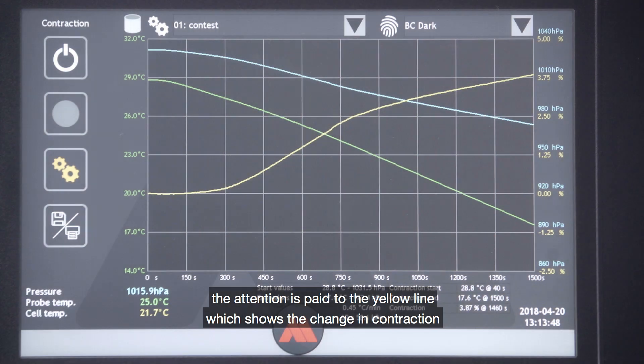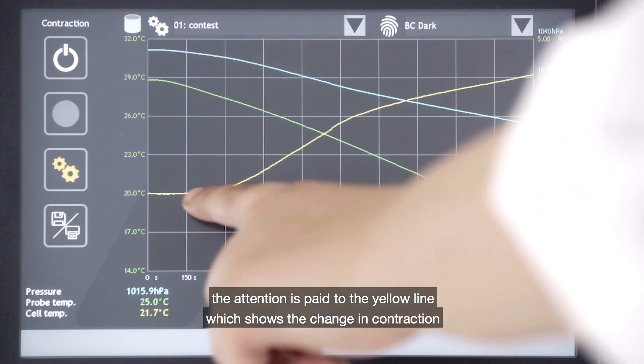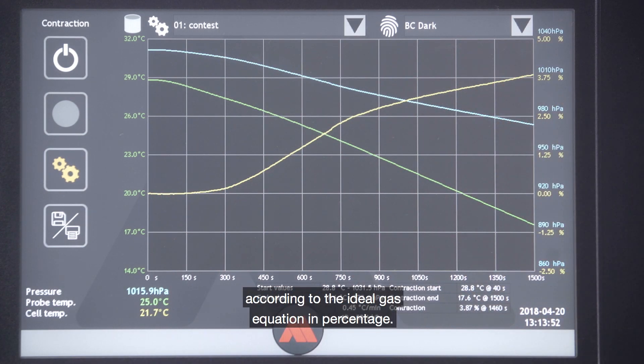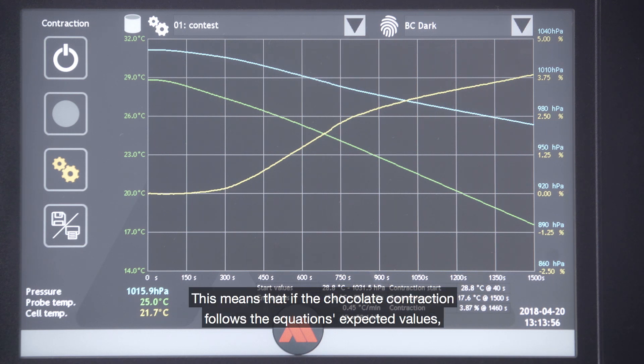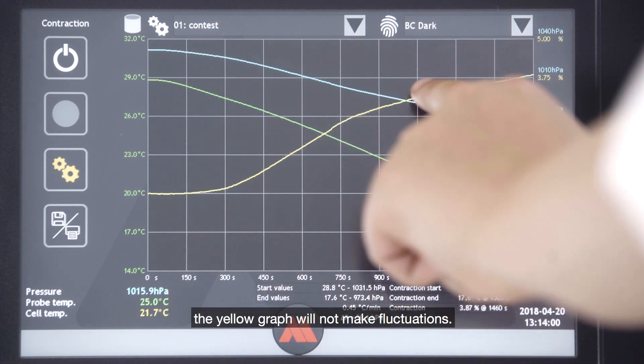When looking at the graph, attention is paid to the yellow line, which shows the change in contraction according to the ideal gas equation in percentage. This means that if the chocolate contraction follows the equation's expected values, the yellow graph will not make fluctuations.